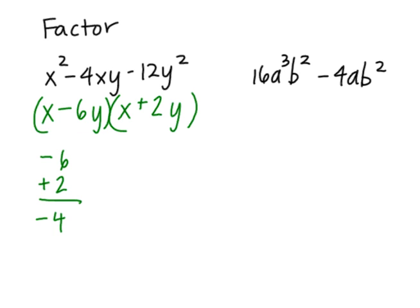The next problem is 16a³b² - 4ab². I see this has a GCF. I see they both have a 4, I see they both have an a, and they both have a b². So when I take that out it leaves me with 4a² and no b's.